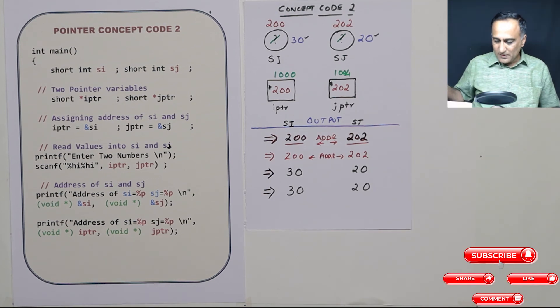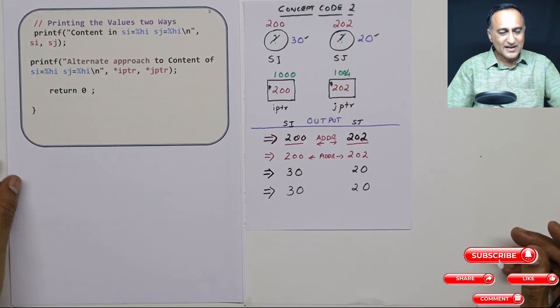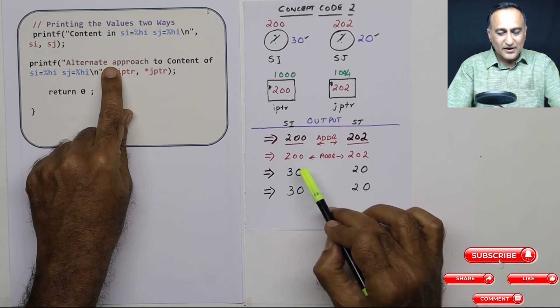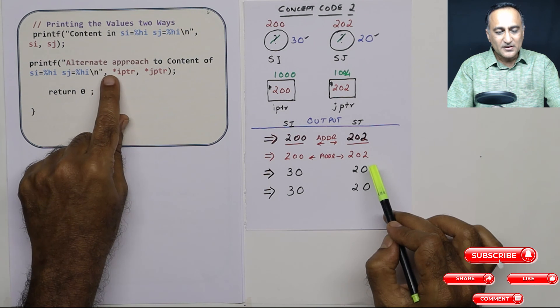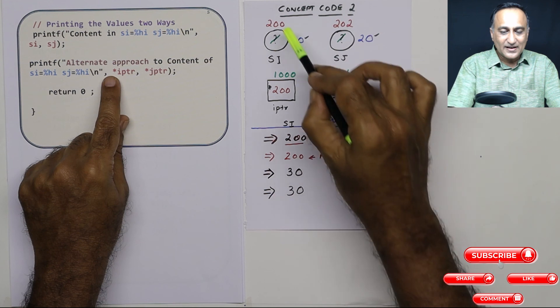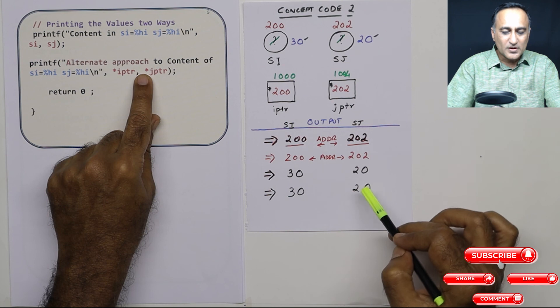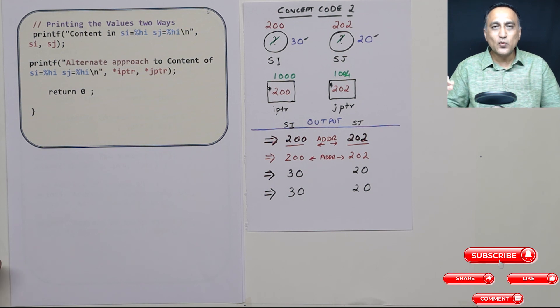On the last step, I am trying to print the values of SI and SJ. SI and SJ is quite simple, it's printing 30 and 20. If I print IPTR, it would have printed 200. If I printed JPTR, it would have printed 202. But the star tells me give me the content at address 200. Content at address 200 is 30. Content at address 202 is 20. So this is how values are printed using variables which can hold addresses.